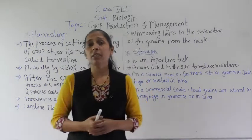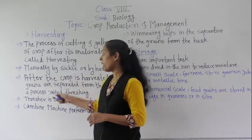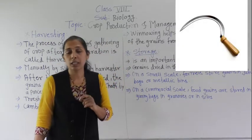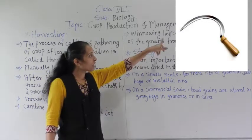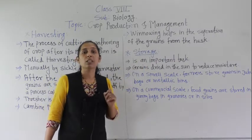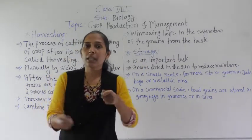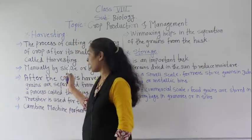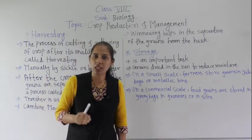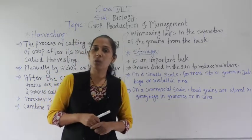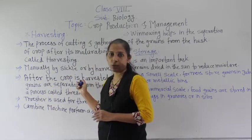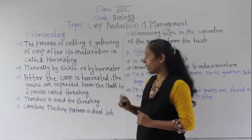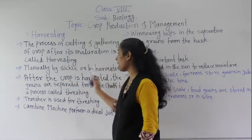Harvesting can be done manually by using a sickle. As you can see in the image, the sickle is a C-shaped agriculture tool with which farmers can cut the crops. Harvesting can be done manually by sickle, or it can also be done by using a machine called a harvester.